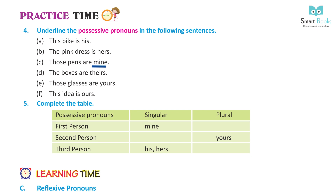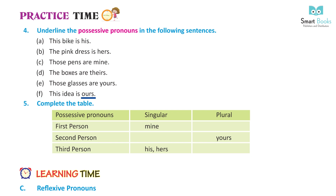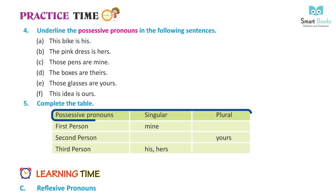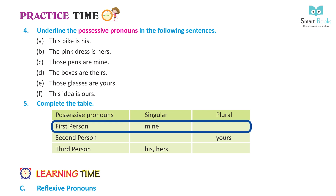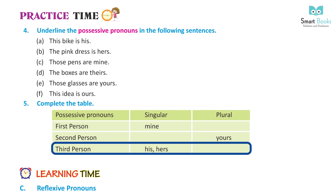Sentences with possessive pronouns to underline: C — those pens are mine (underline mine). D — the boxes are theirs (underline theirs). E — those glasses are yours (underline yours). F — this idea is ours. Complete the table — possessive pronouns: singular/plural. First person: mine / ours. Second person: yours / yours. Third person: his, hers / theirs.